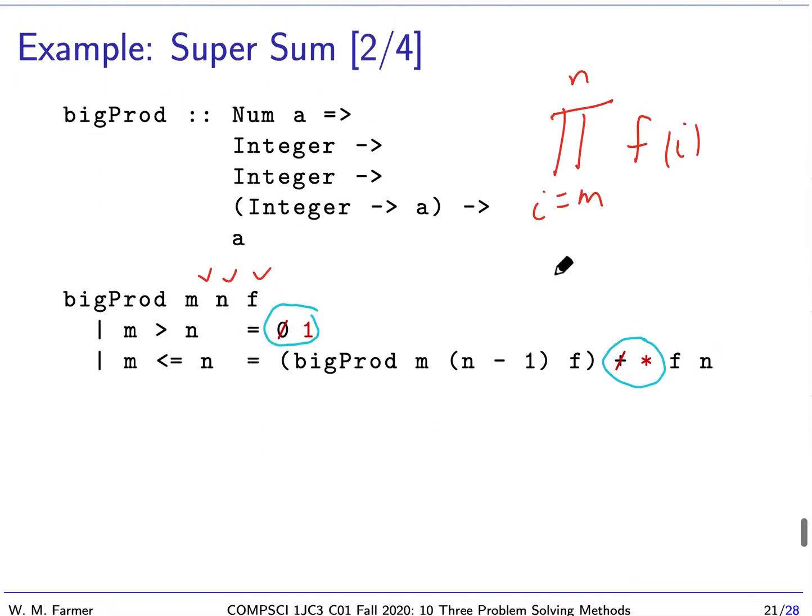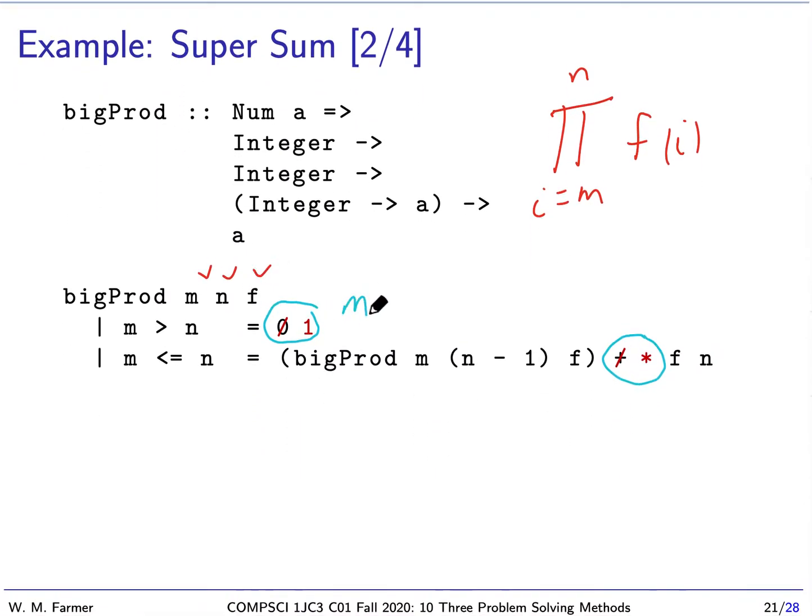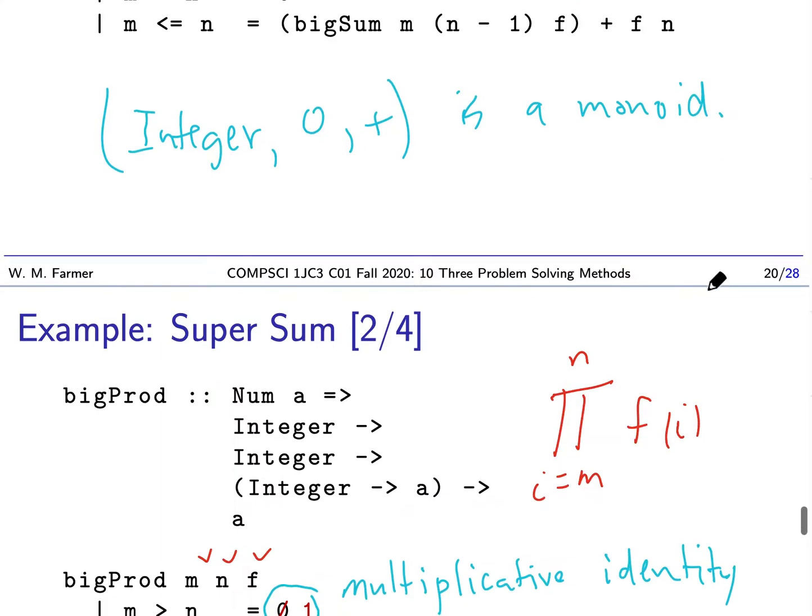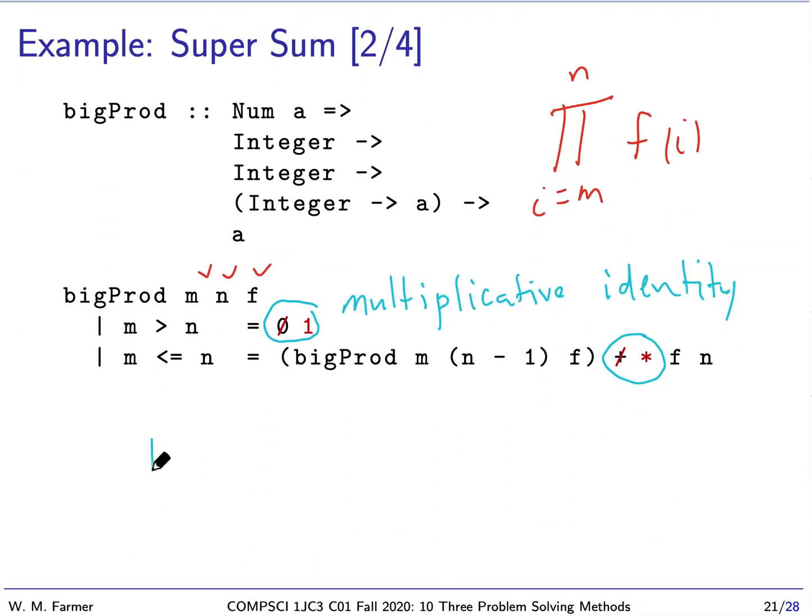And what is one? One is the multiplicative identity. And if we go up here, and we look at the numbers, whatever these numbers are, I'll just say, it could be integer, whatever they are. If we go with zero and plus, this is a monoid. We just talked about monoids in our last lecture. And guess what? If we have integer, for instance, with one and times, this is a monoid.